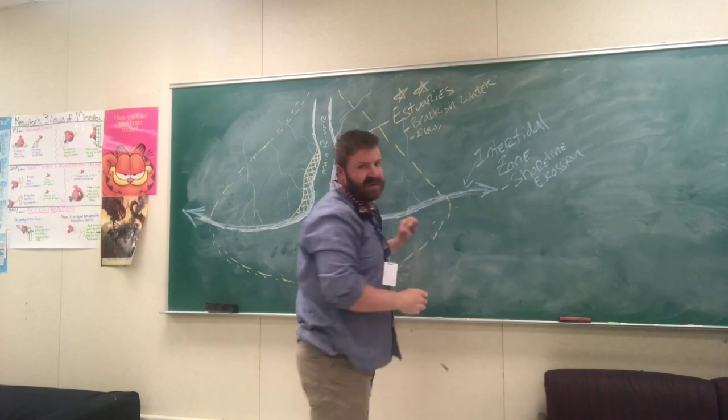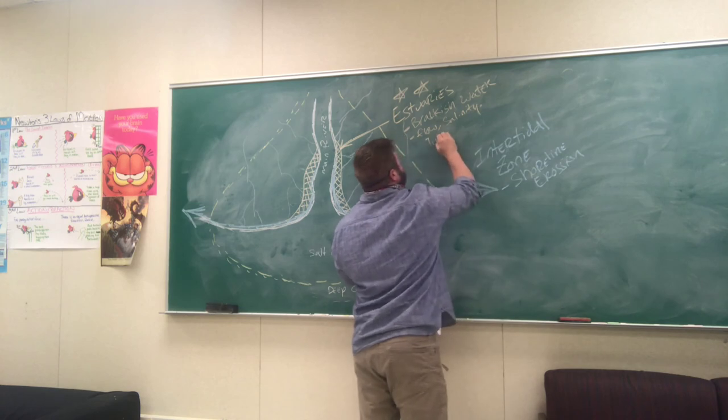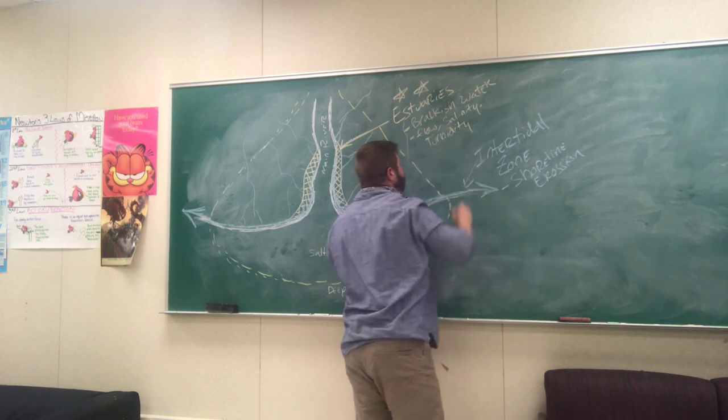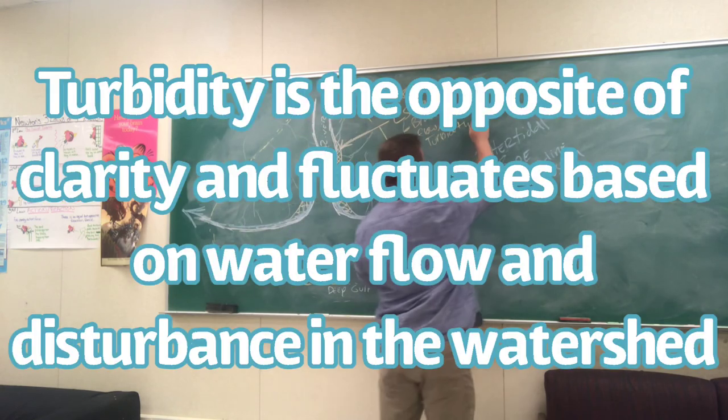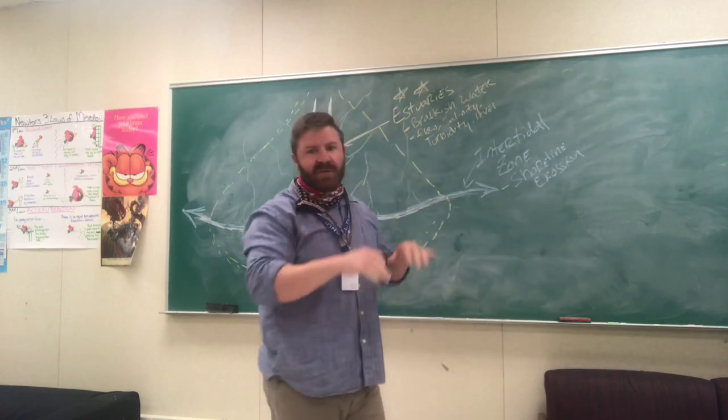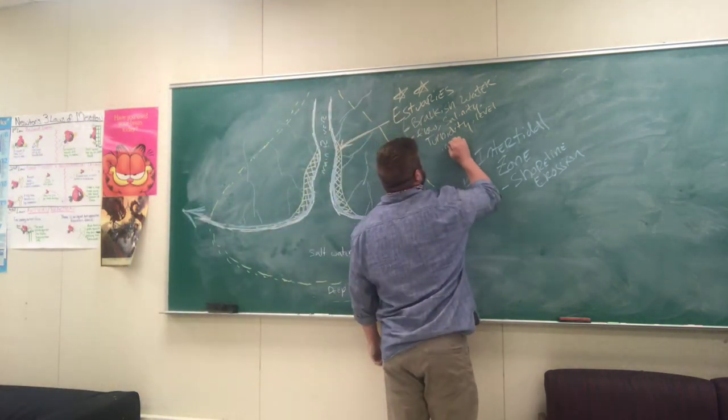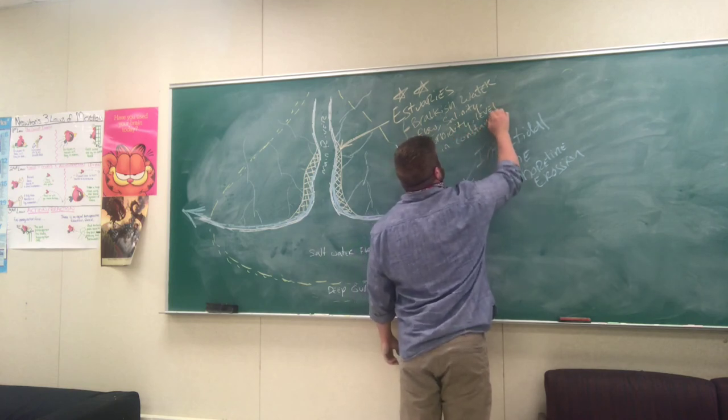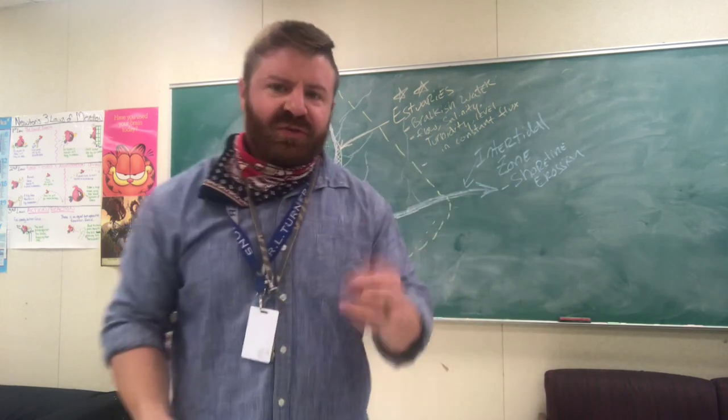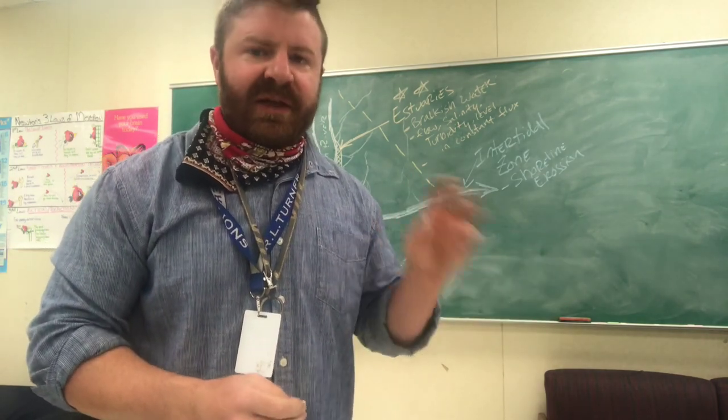Flow, salinity, turbidity, water level all together, just where the water is all together. All of those fluctuate constantly. And because of that, we have extremely high biodiversity. All estuaries are biodiversity hot spots and need to be protected. I'm going to say that again.